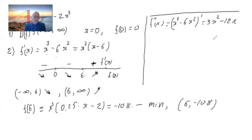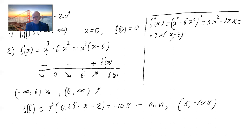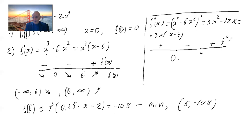Please check critically for any mistakes. To construct the sign chart for the second derivative, it's a good idea to factor the expression: 3x(x minus 4). We then construct the sign chart with critical points at x equals zero and x equals four.